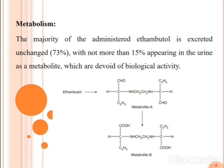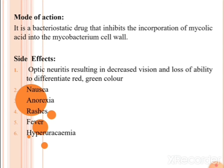Regarding the metabolism of ethambutol: the majority — approximately 73% — is excreted unchanged, with no more than 50% appearing in urine as metabolites devoid of biological activity. The schematic shows ethambutol giving metabolite A and metabolite B. The mode of action is bacteriostatic; it inhibits mycolic acid in the bacterial cell wall — a mechanism similar to isoniazide.